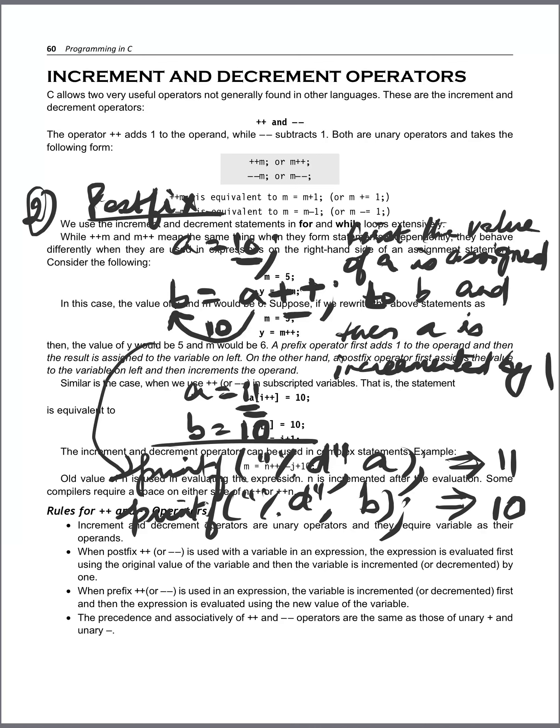So in postfix, first the old value of a is assigned to b, and then the value of a is increased by 1. The same behavior applies to the -- operator: in prefix, the value decrements first and then assigns; in postfix, the value assigns first and then decrements.